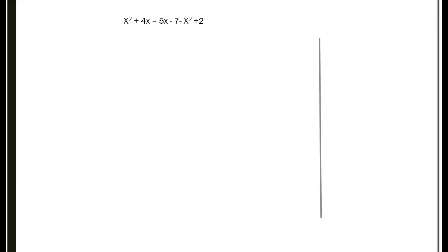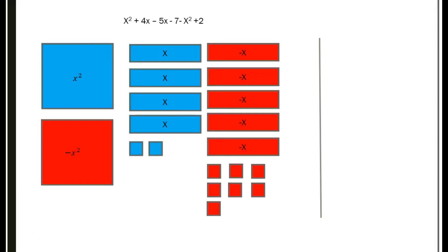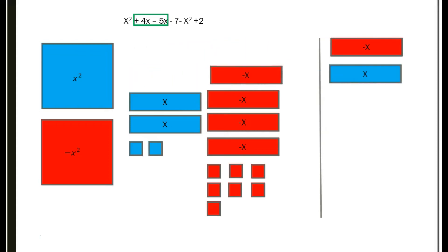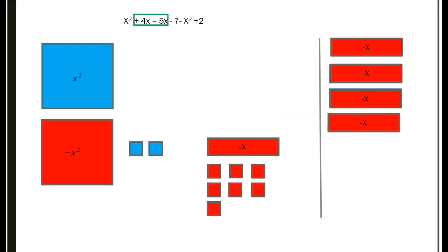Let's try another one. I have x squared plus 4x minus 5x minus 7 minus x squared plus 2 — that seems like a long equation. Let's lay them out: 1 x squared, 4 x's, 5 negative x's, minus 7 as the unit tiles, 1 negative x squared, and plus 2. Let's combine the x's first — positive 4x minus 5x. We take four sets of zeros, one for each pair.